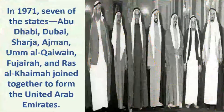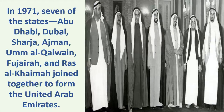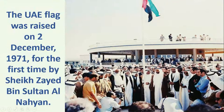In 1971, seven of the states — Abu Dhabi, Dubai, Sharjah, Ajman, Umm Al-Quwain, Fujairah, and Ras Al-Khaimah — joined together to form the United Arab Emirates. The UAE flag was raised on the 2nd of December 1971 for the first time by Sheikh Zayed bin Sultan al-Nahyan.